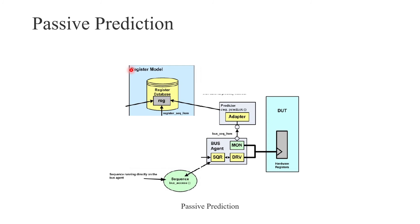The next is passive prediction. The difference between explicit and passive prediction is that in passive prediction, we are not defining a register sequence — we are just defining a bus sequence. The driver gets this bus sequence with the help of the sequencer and drives it to the DUT, and the DUT register updates. The monitor captures this via analysis port, and the predictor gets this with the help of its analysis export. The predictor has an inbuilt adapter which converts the bus sequence into the equivalent register sequence, and with this register sequence the register database will update. So in passive prediction, we just define a bus sequence, not a register sequence.